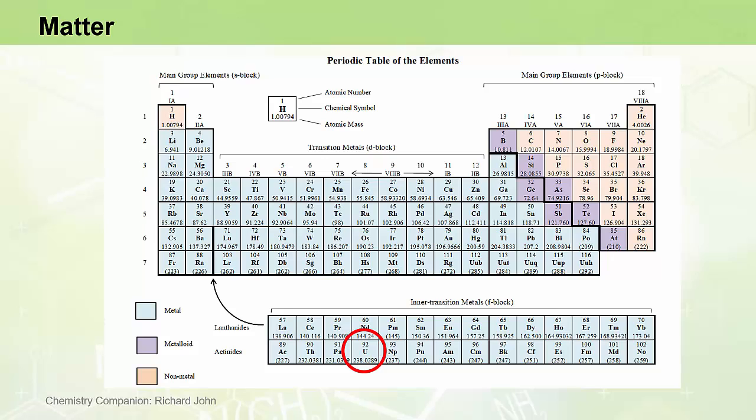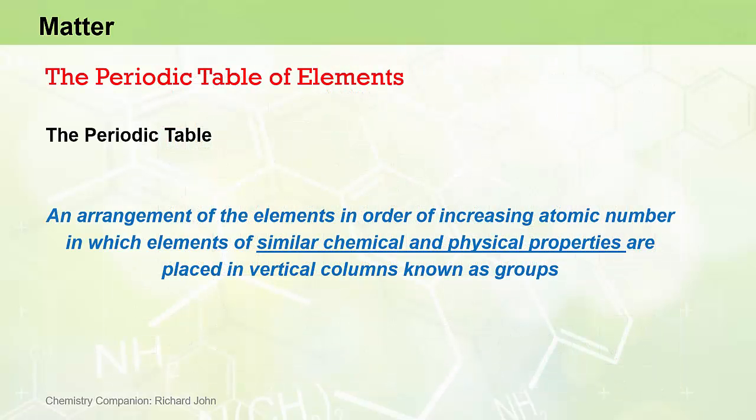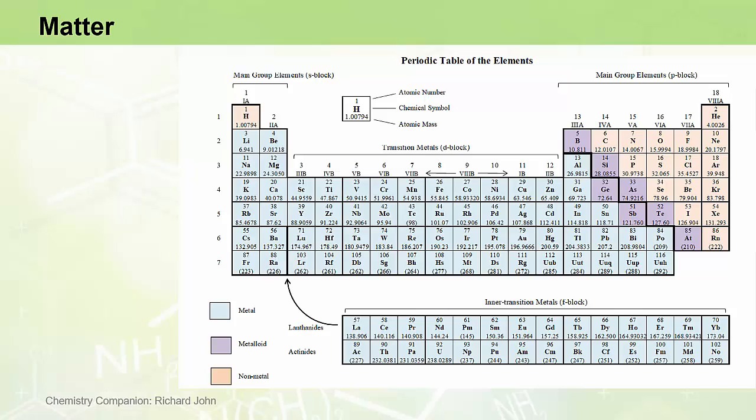In words, the Periodic Table can be described as an arrangement of elements in order of increasing atomic number in which elements of similar chemical and physical properties are placed in vertical columns known as groups. So, for example, lithium, sodium, and potassium all share similar chemical and physical properties and are all placed in the same vertical column or group.